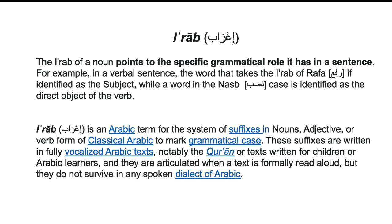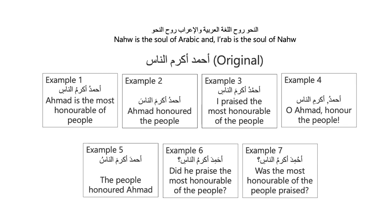I'rab is an Arabic term for the system of suffixes in nouns, adjectives, or verb forms of classical Arabic to mark grammatical case. These suffixes are written in fully vocalized Arabic texts, notably the Quran or texts written for children or Arabic learners, and they are articulated when a text is formally read aloud, but they do not survive in any spoken dialect of Arabic. In Quranic Arabic, it is accepted that Nahu is the soul of Arabic and I'rab is the soul of Nahu.